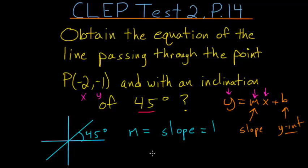So the y value is negative 1, so we have negative 1 equals the slope, which is 1, times by our x value, which is negative 2, and then plus b. So now we can just solve this equation for b.